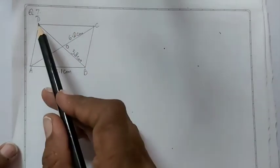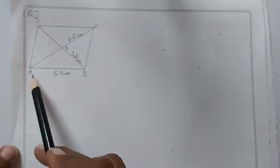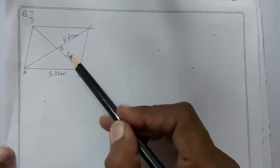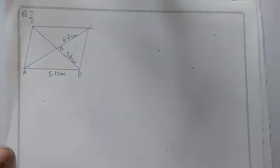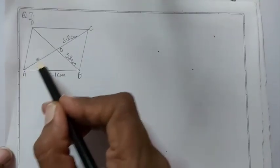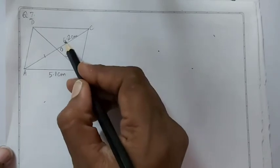ABCD is a parallelogram where AB equal to 5.1 cm, AC 6.2 cm and BD 5.8 cm. As we know diagonals of parallelogram bisect each other.